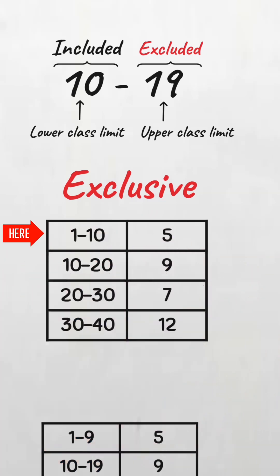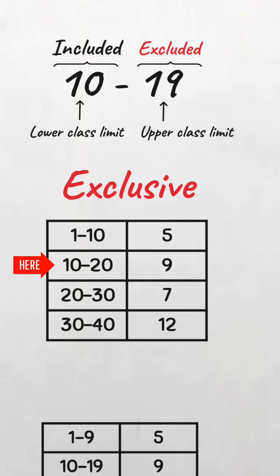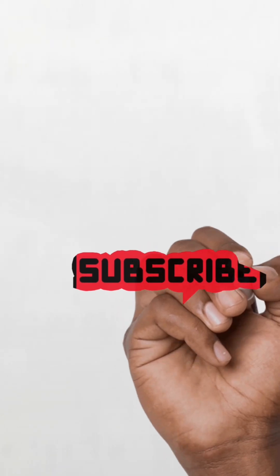the first class will take values between 1 and 9.9 but will exclude the value of 10, which is the upper limit. 10 will have to go into the next class. This type is particularly useful when dealing with continuous data because of the decimal points.